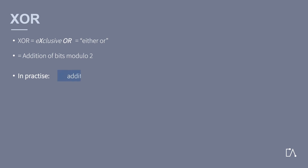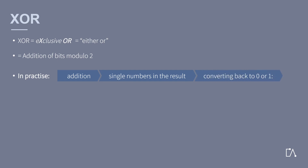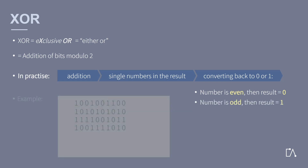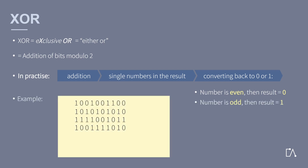First, we add the respective numbers of the bits using common addition. Next, the individual results are considered as single numbers. The numbers are converted back to zeros and ones. To do this, you check whether the individual numbers are even or odd. If the number is even, then a zero can be noted. If the number is odd, then a one can be noted. We will illustrate this with an example.